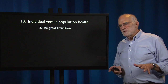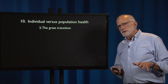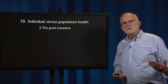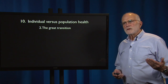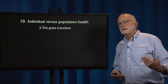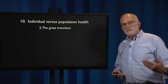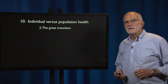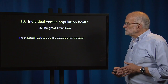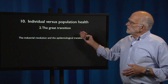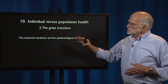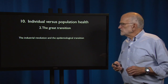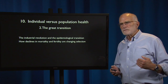Some of the major events in human history are population-level consequences of individual decisions, and one that has great impact on the issue of mismatch and the health of contemporary populations is the Great Transition — the phrase we use to describe the combination of the Industrial Revolution and the epidemiological transition that followed from it.